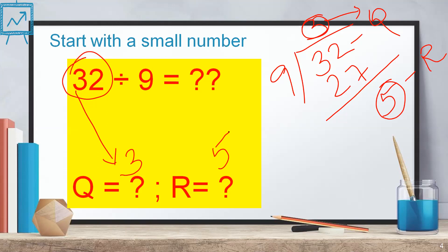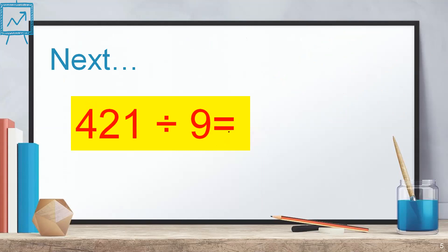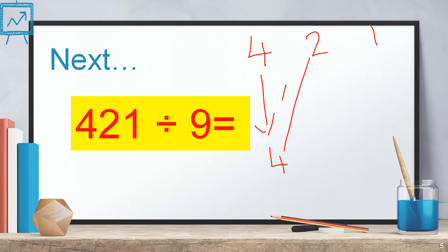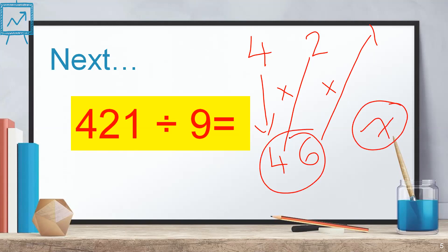Let's see whether this technique can be applied to bigger numbers — 421 divided by nine. The first step is always to write the number with a little bit of spacing between the digits. Write the first digit as it is: four. The last number of your answer is always the remainder. To get succeeding numbers, keep adding the previous digits. Four plus two is six, then six plus one is seven. So the quotient is 46 and the remainder is seven.